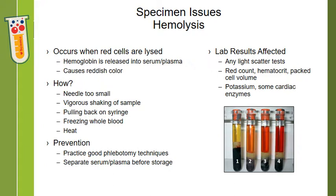Hemolysis can be prevented with good phlebotomy techniques. Make sure you separate your serum or plasma before freezing, and keep those tubes away from any heat sources in the lab. Hemolysis does affect certain lab results, and sometimes it depends on which test methodology you're using. Any lab test that is a light scatter or absorbance test is going to be affected by hemolysis. Hematology tests that might be affected include your red count, hematocrit, and packed cell volume. The chemistries affected include potassium, as well as some of your cardiac enzymes, like your CK.